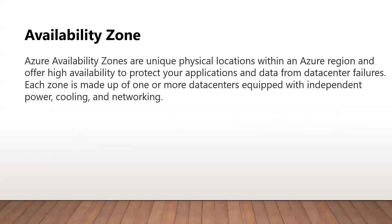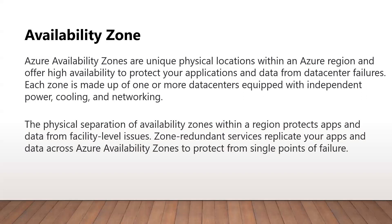The next one is availability zone, which is a regional feature designed to protect from data center failure. Each zone is made up of one or more data centers equipped with independent power, cooling, and networking. Since availability zones are physically separate within a region, they protect your app from facility-level issues. When you start deploying your applications or services in availability zones, you start utilizing the high availability and disaster recovery features of Azure, making your applications more durable and less prone to issues.